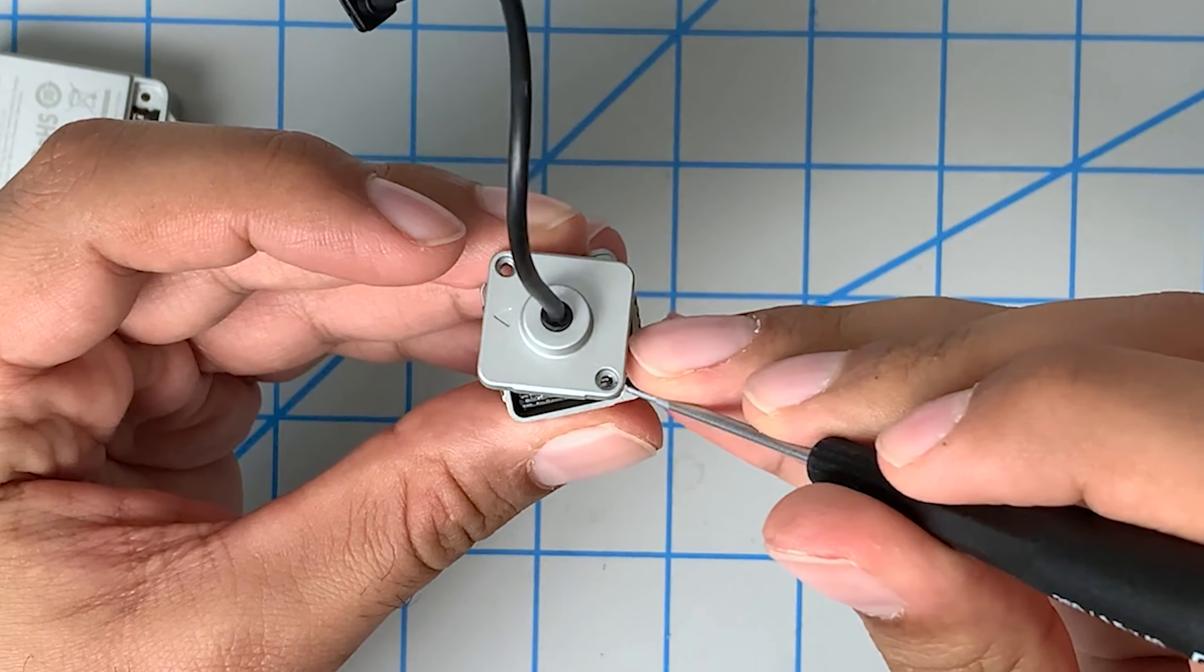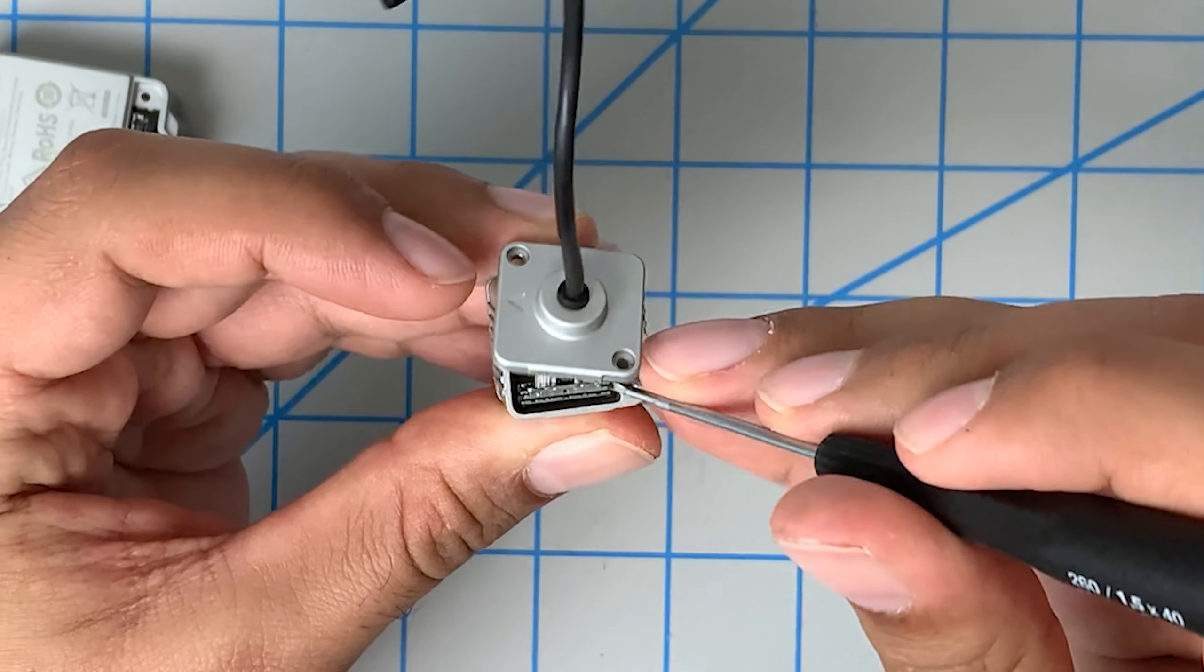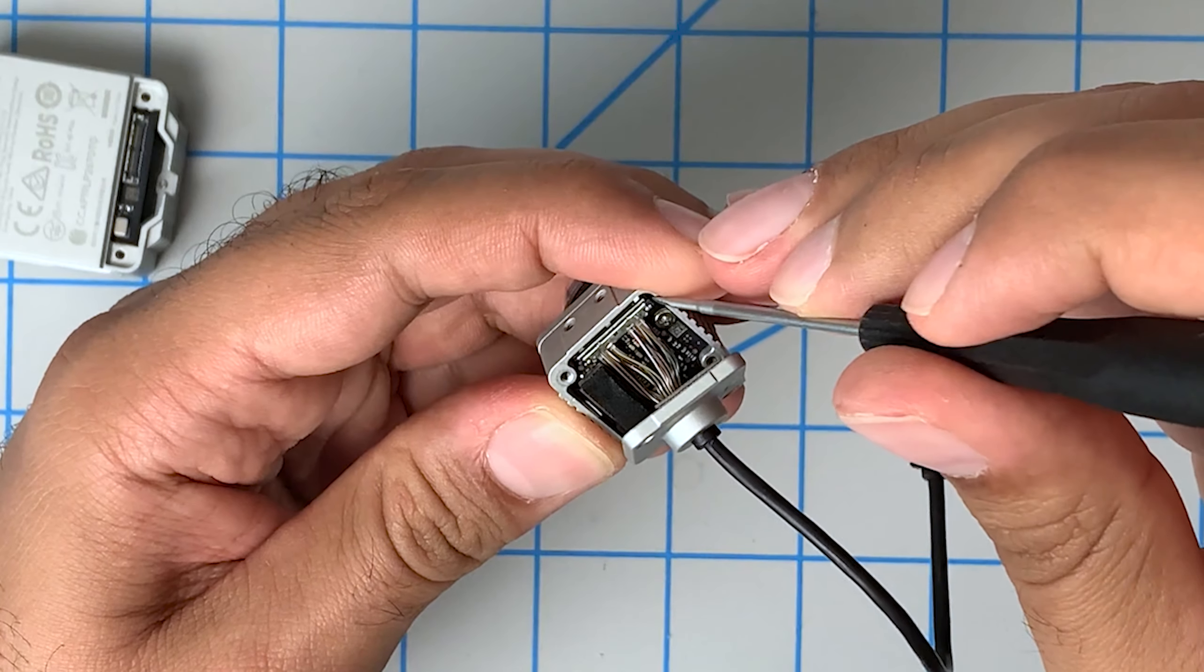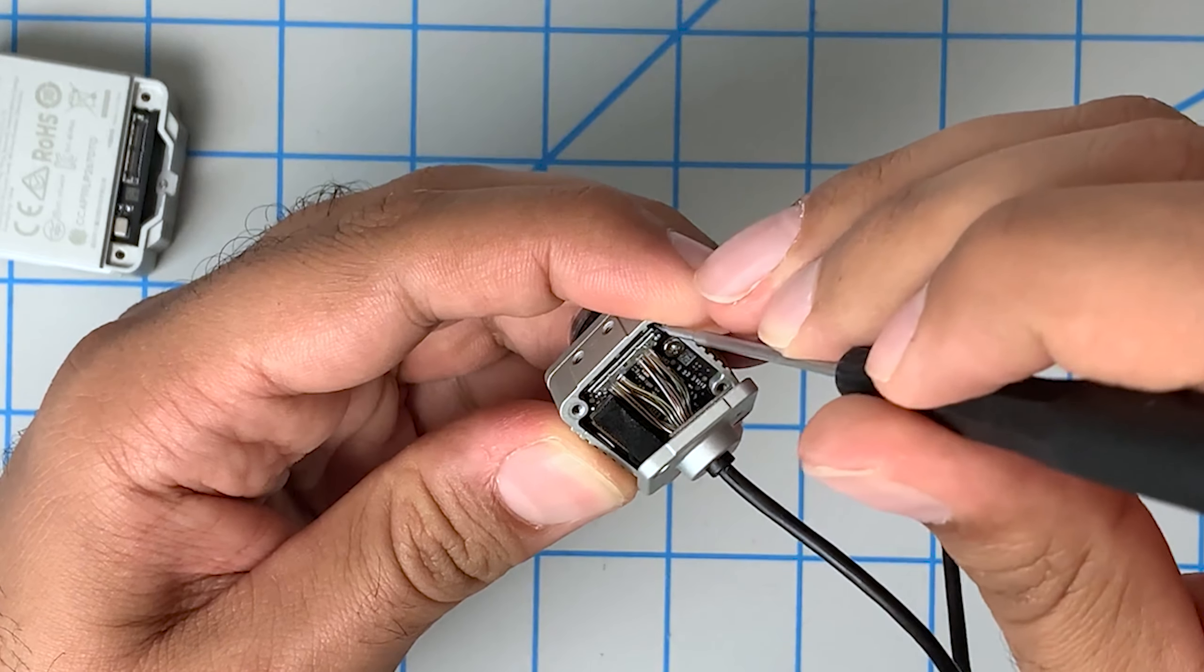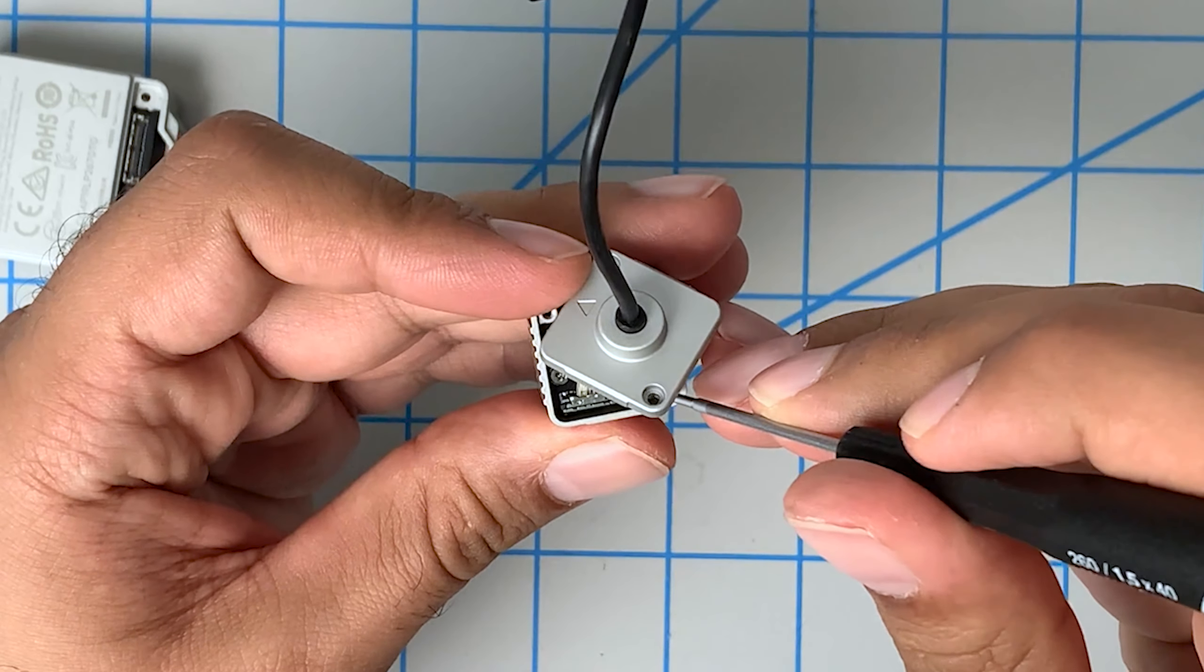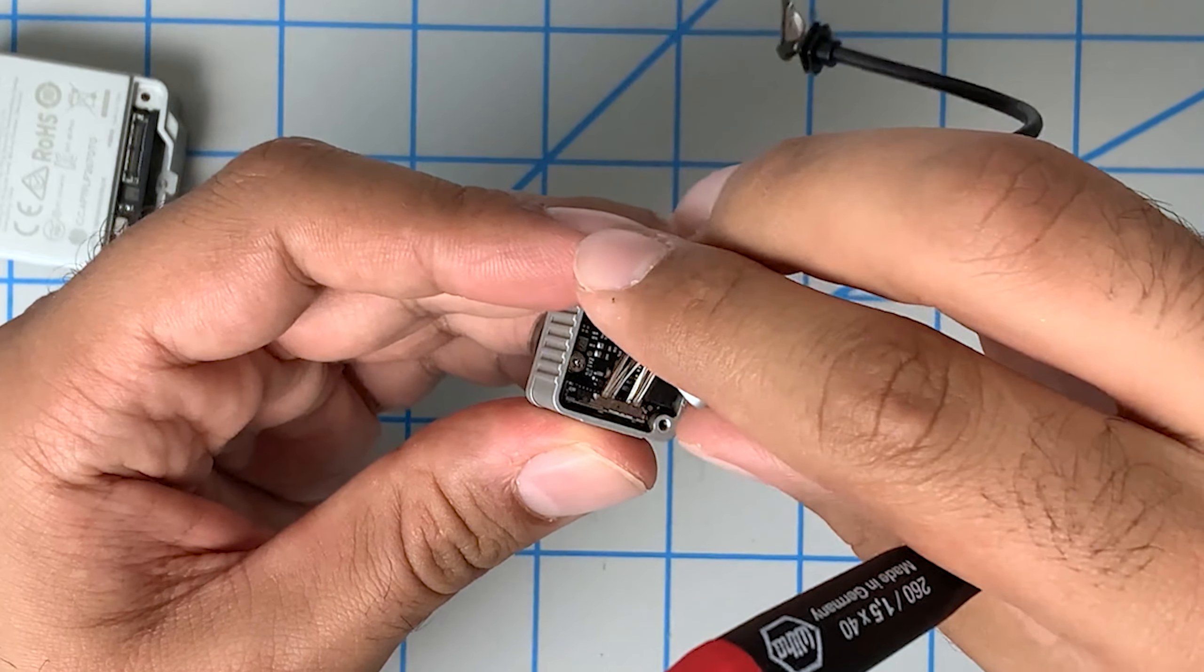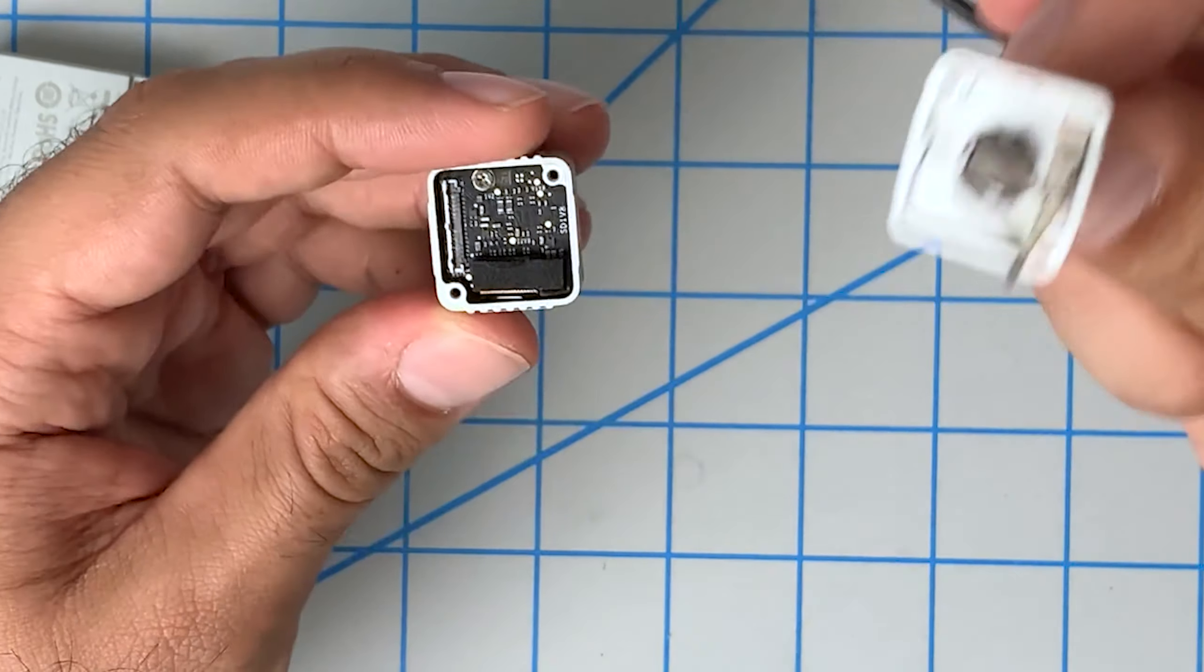So very similarly, we want to get underneath here and just pop it out slowly. So work it a little bit on either side. There you go. Now this has been removed.